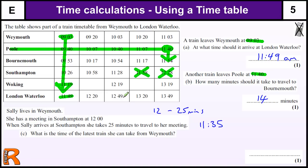The 11:58 arrival is no good because it's too late. But this train fits. So what is the time of the last train she can take from Weymouth? Looking at the Weymouth departures, she could catch these two trains, but the 10:03 is the last one she could catch.